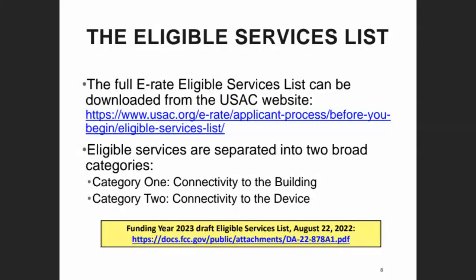A bit about the eligible services list — I have a link to it on the USAC website, but also a link to the draft version released back in August. Normally by now we'd have that finalized, but there's no expectation of great changes. Unless the FCC is doing a major overhaul like E-Rate modernization, the eligible services list doesn't vary much from year to year. I have highlighted the eligible services on the next couple of slides.